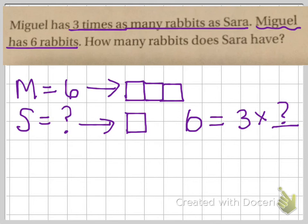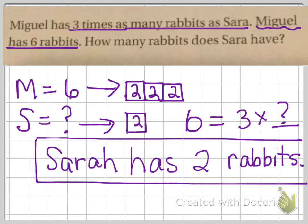So, we have to think to ourselves, 3 times what is 6? 2. 2 times 3 is 6. So, we solved this correctly and said Sarah has 2 rabbits. I write my answer and I put a box around it so you can clearly see my answer statement. Sarah has 2 rabbits.